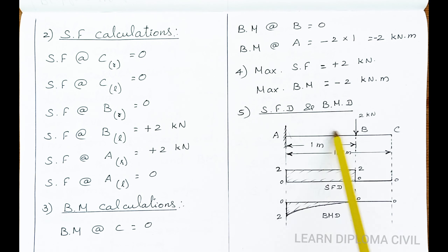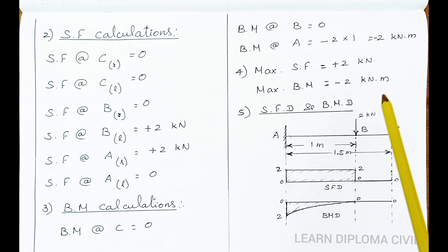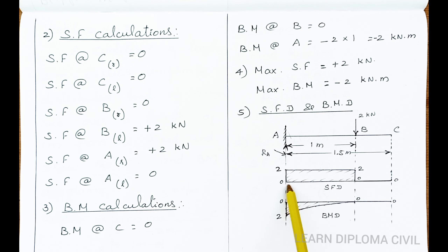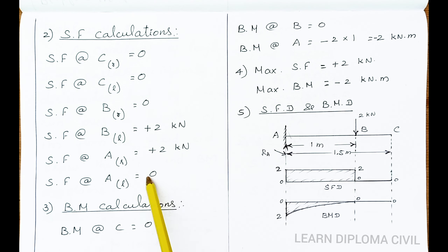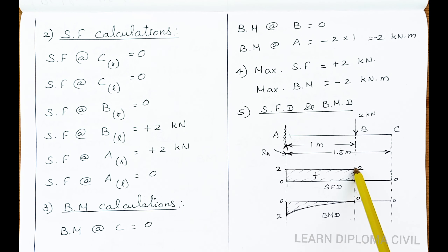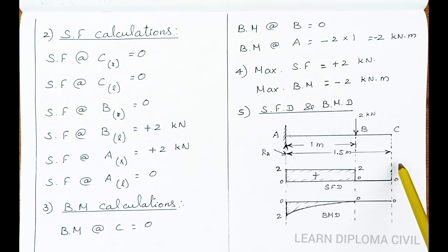Now draw the shear force diagram and bending moment diagram. Load diagram shows the span length and load applied at 1 meter distance. Mark important points A, B, C with dotted lines extended down. For the shear force diagram, draw a horizontal baseline representing 0 shear force. Shear force at left of A is 0 — mark 0. Shear force at right of A is plus 2, so mark 2 at point A. Shear force at right of B is 0. Shear force at left of C and right of C are both 0. Connect points 0, 2, 0 — this is the shear force diagram with positive value.